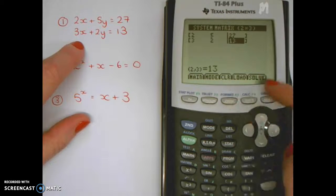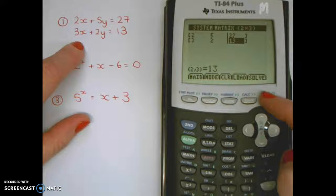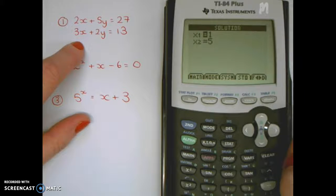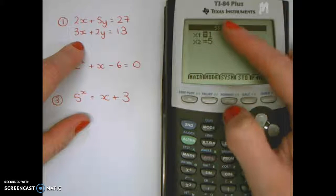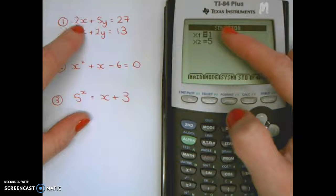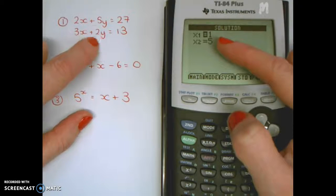Once you've got those in, all you need to do is solve it. Go to solve, and there you go. It gives you x is one, y is five. The first value, which was our x, is one. The second value, which was our y, is five.